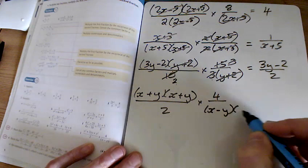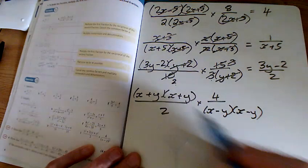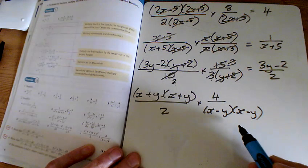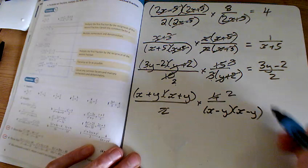And I'm going to write x minus y, x minus y there. But we can't do any cancelling with those things there, none of that will actually cancel. The only thing we've got is that 4 cancels with the 2.